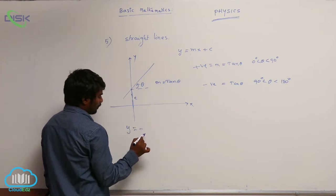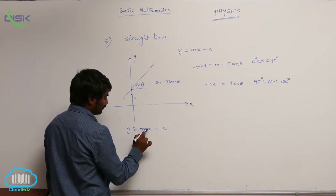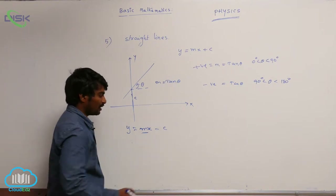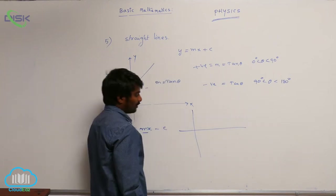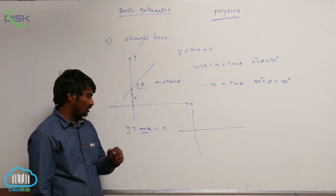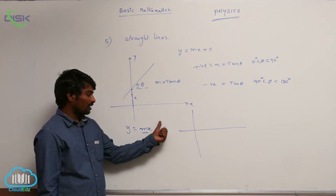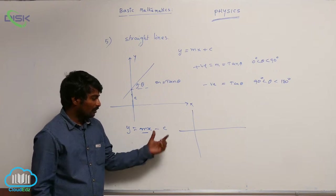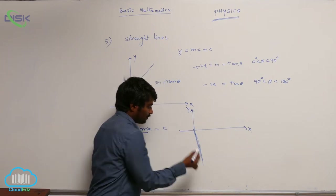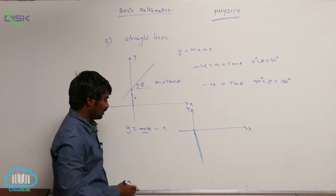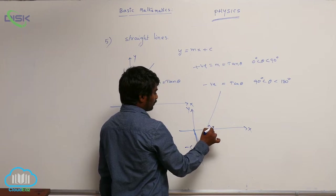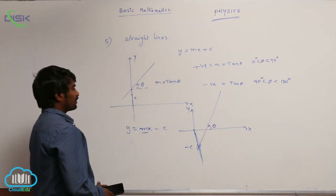For y is equal to mx minus c, it has positive slope but intercept is negative. That means the straight line must make an angle less than 90 degrees with a positive x-axis because slope is positive, but y intercept is negative so it has to intersect the negative y-axis. So it will be minus c, and theta is the angle with the positive x-axis.